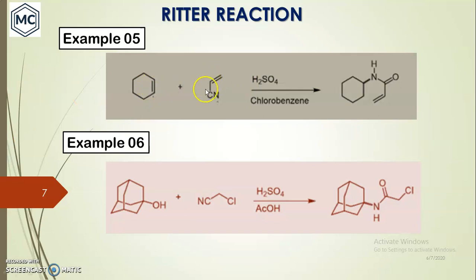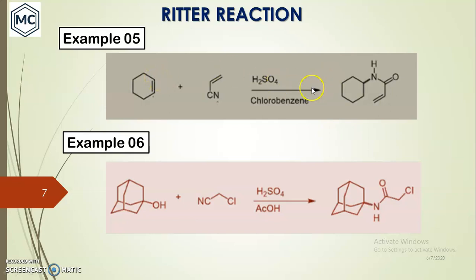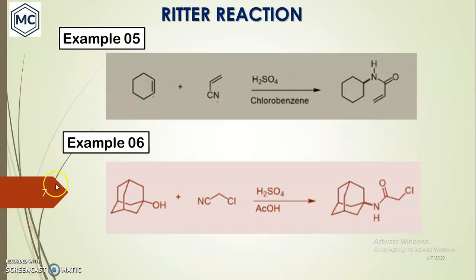Next example: cyclohexene with vinyl nitrile in the presence of acid forms a product. First the alkene gets protonated and forms a carbocation. The nitrogen of the nitrile attacks the carbocation — the C≡N bond gives an N-H-C=O bond — and that N-H-C=O bond and the remaining C=C double bond appear in the product.